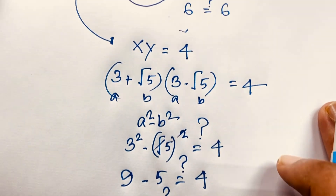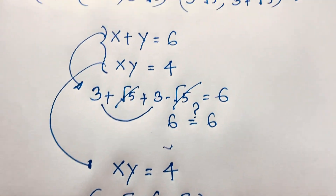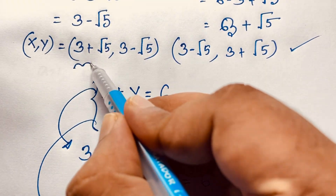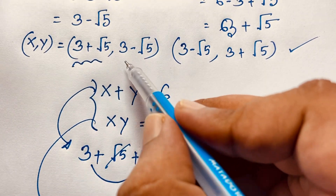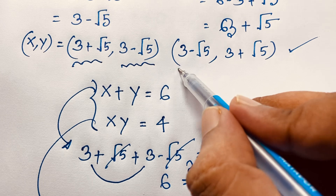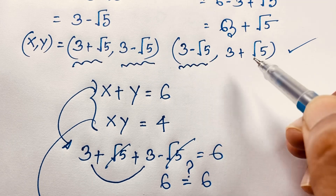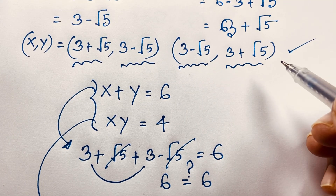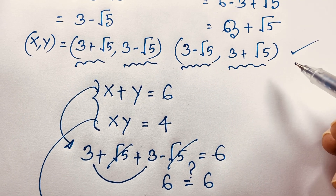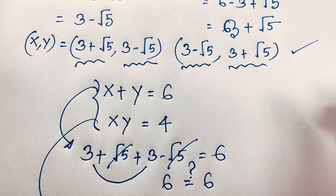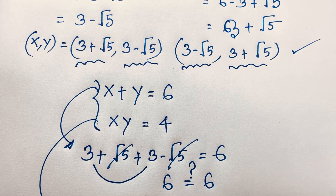So our final solution is: when x equals 3 plus root 5, y equals 3 minus root 5; and when x equals 3 minus root 5, y equals 3 plus root 5. Thank you all. If you enjoyed this Maths Olympiad question, please subscribe to my channel for other interesting videos. Goodbye. Take care.